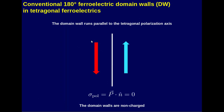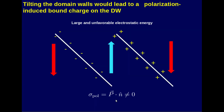In conventional 180-degree domains in tetragonal ferroelectrics, the domain walls run parallel to the tetragonal polarization axis. In this configuration, the polarization charge — defined as the dot product of polarization and the unit vector normal to the domain wall — vanishes, making the domain walls uncharged. However, if you tilt the domain walls, it leads to polarization-induced bound charges at the domain wall. If negative charges accumulate on one side and positive charges on the other, this leads to a large unfavorable electrostatic energy, and the polarization charge is no longer zero.